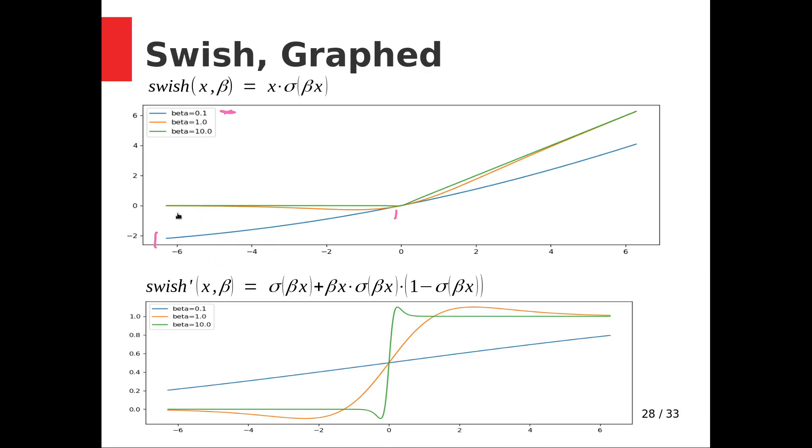For beta equals one, we see that it kind of dips down, dips right there, and then it goes up. And then for values, or for the value of 10, it behaves very near ReLU. It looks a lot like it's zero and then maybe a straight line. So it's sort of tunable with beta. You can drive it from very near ReLU to very near straight line with a kind of flourishy thing in the middle.